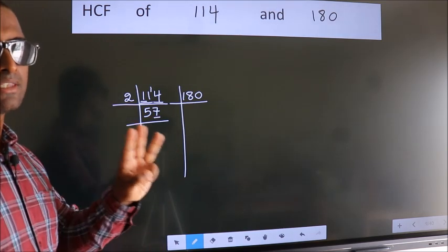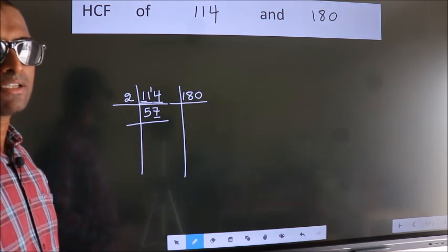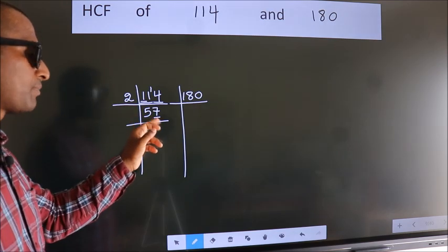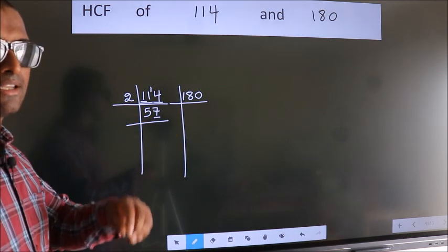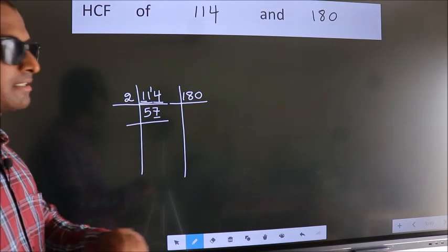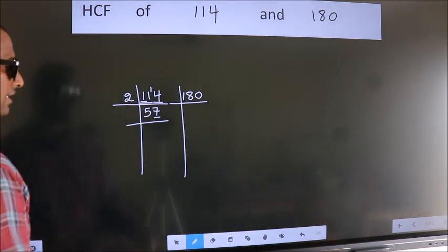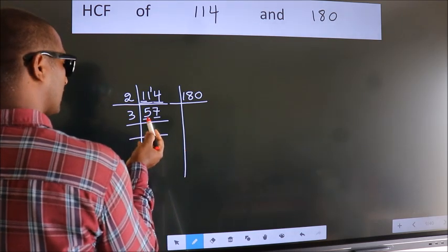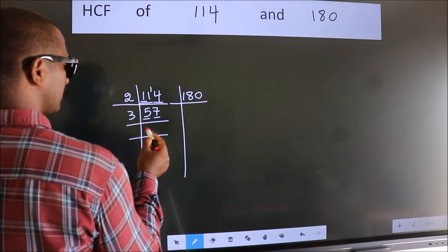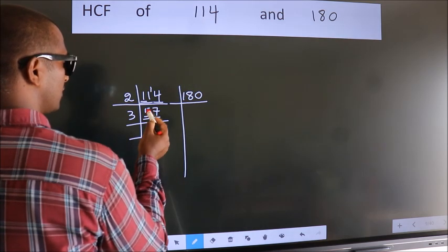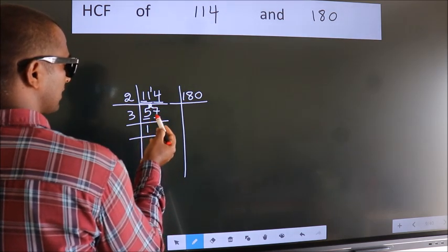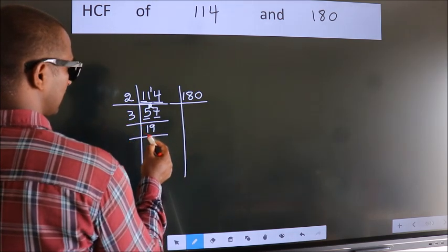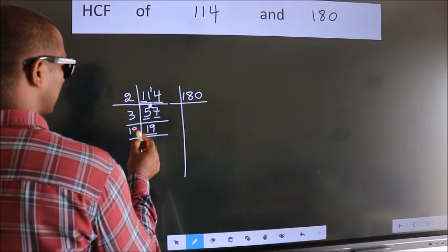Next prime number 3. To check divisibility by 3, we should add the digits. 5 plus 7, we get 12. Is 12 divisible by 3? Yes. So this number also divisible by 3. So take 3. First number 5. A number close to 5 in 3 table is 3 once 3. 5 minus 3, 2, 2 carried forward 27. When do we get 27 in 3 table? 3 nines 27. Now 19 is a prime number, so 19 once 19.